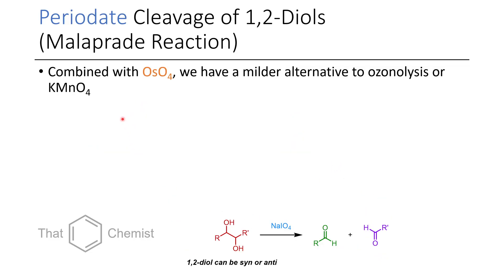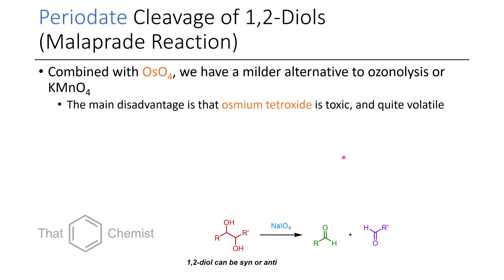One really useful transformation is periodate cleavage. This is a popular reaction because it works most of the time. If you can prepare a 1,2-diol — which can be syn or anti — and treat it with sodium periodate, it will be converted to two aldehydes or ketones depending on whether the alcohols are further substituted. Tertiary alcohols give ketones, while secondary alcohols give aldehydes. You can also cleave off a terminal group you don't need, making something like acetone.